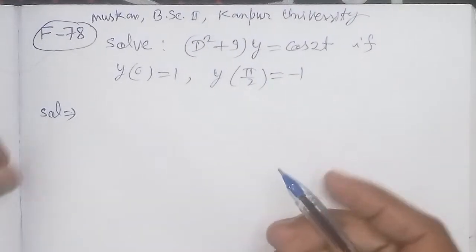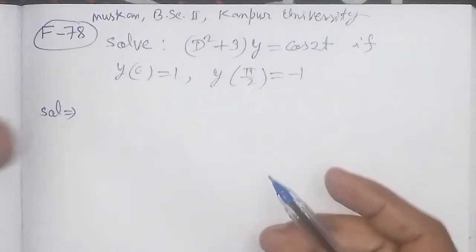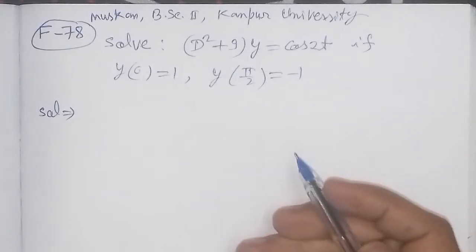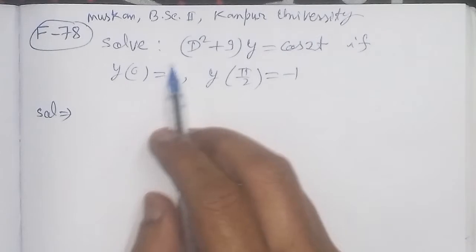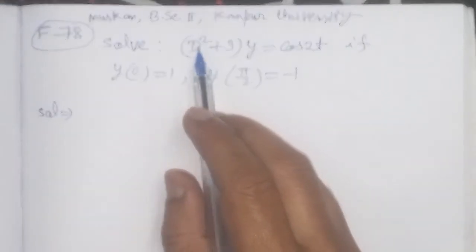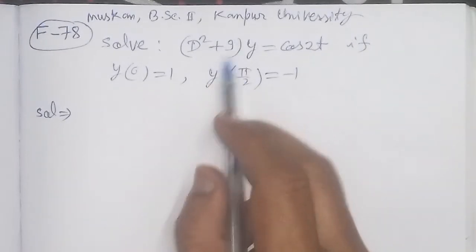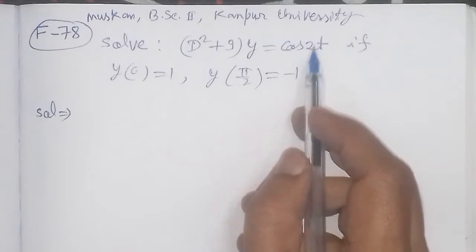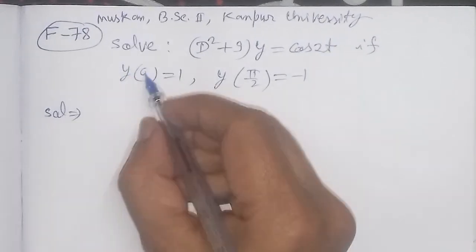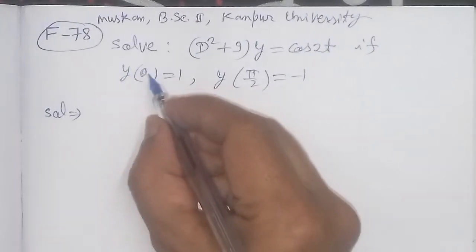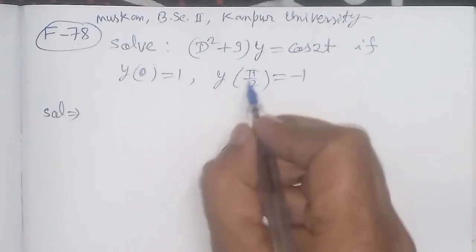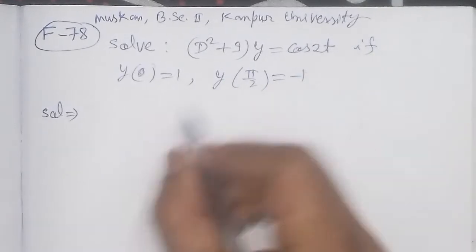Bismillahirrahmanirrahim. On the demand of Muskan Bessy, second year Kanpur University, we solve this differential equation: d² + 9y = cos(2t), with boundary conditions y(0) = 1 and y(π/2) = -1.